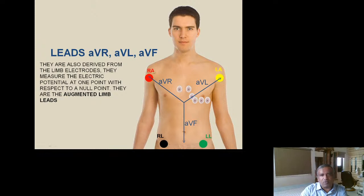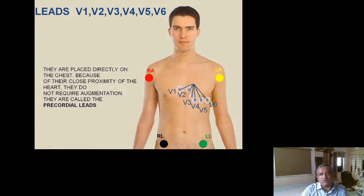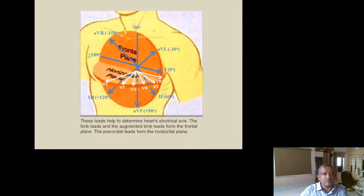The augmented limb leads — aVR, aVL, and aVF — measure electrical potential relative to a zero reference point in the chest. Because this voltage is very small, augmentation is needed, hence the name. The chest leads V1 to V6, being in close proximity to the heart, receive a good electrical impulse and do not require augmentation, so they are simple, non-augmented leads.